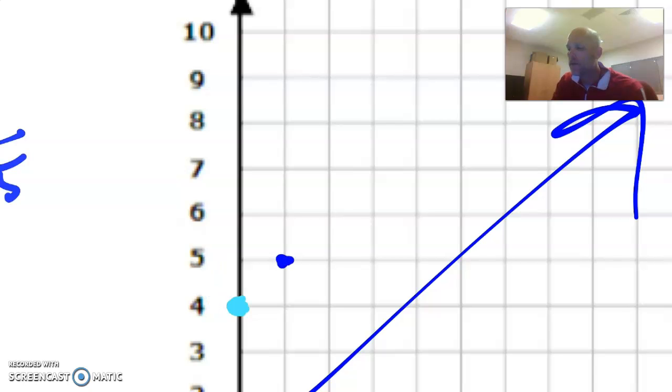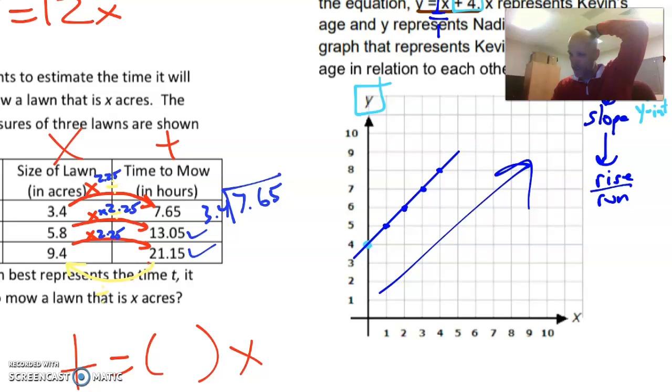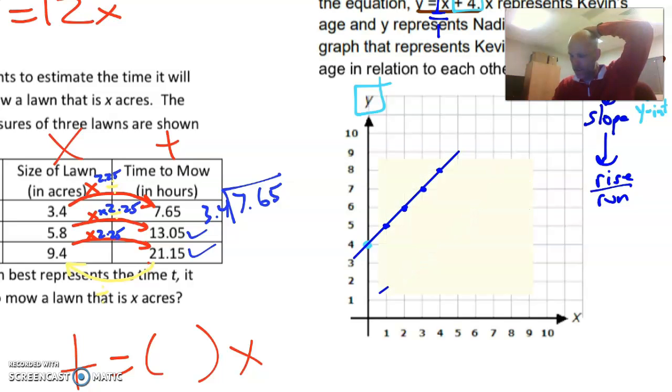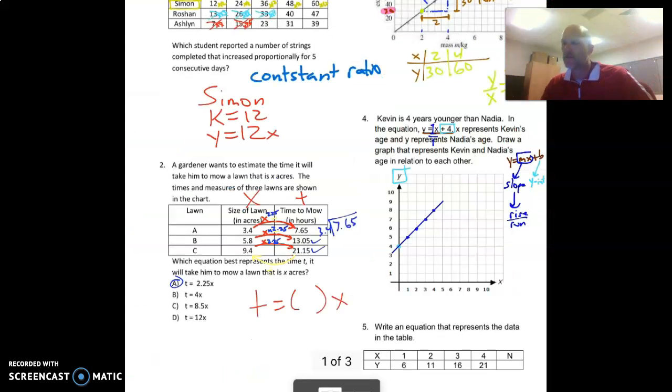Rise one, run one, rise one, run one. Rise one, run one. See the pattern there? And then we can connect that. Alright. So that is that graph. That's that line equation. Put on a graph. Alright. Let's look at number five.